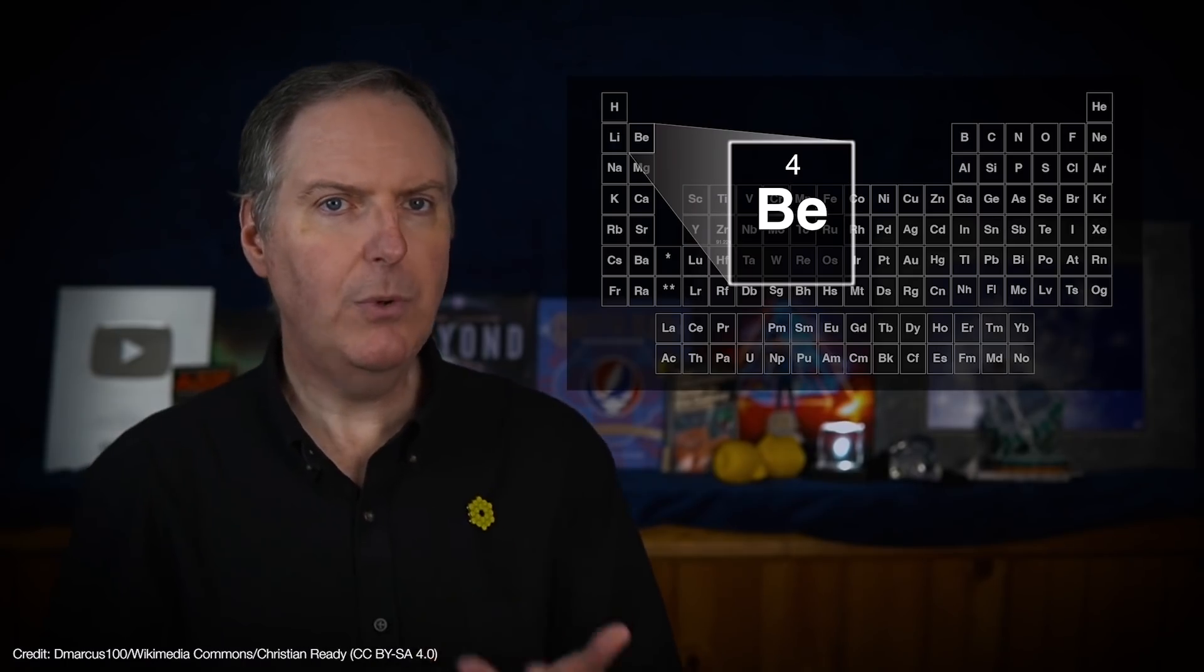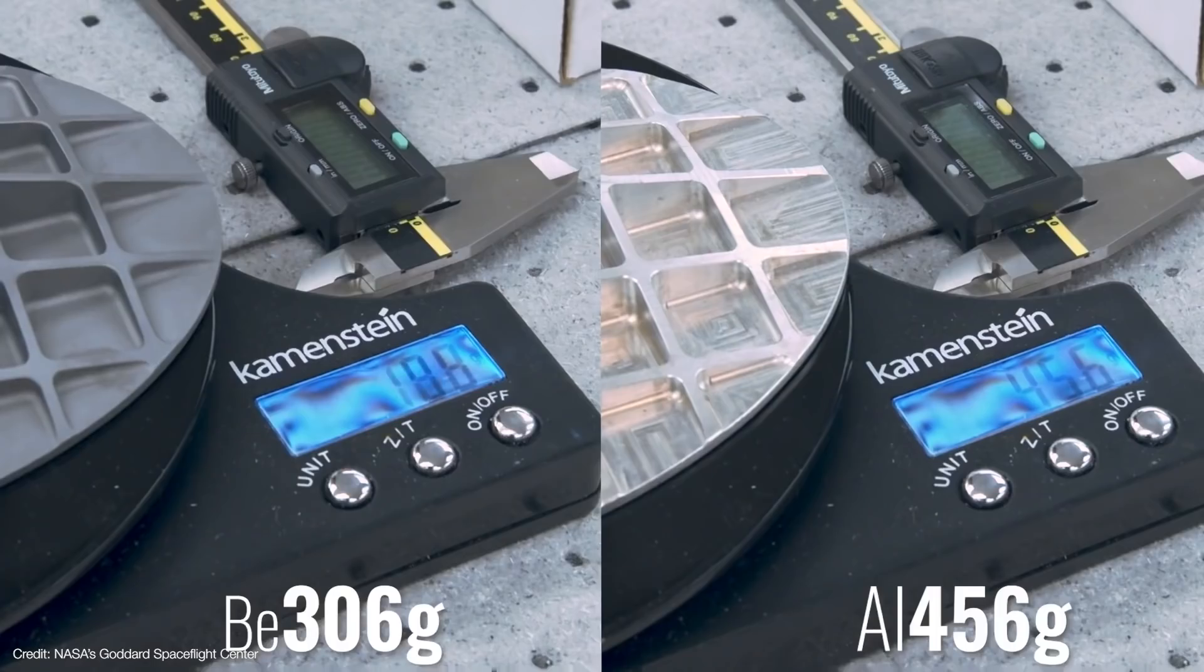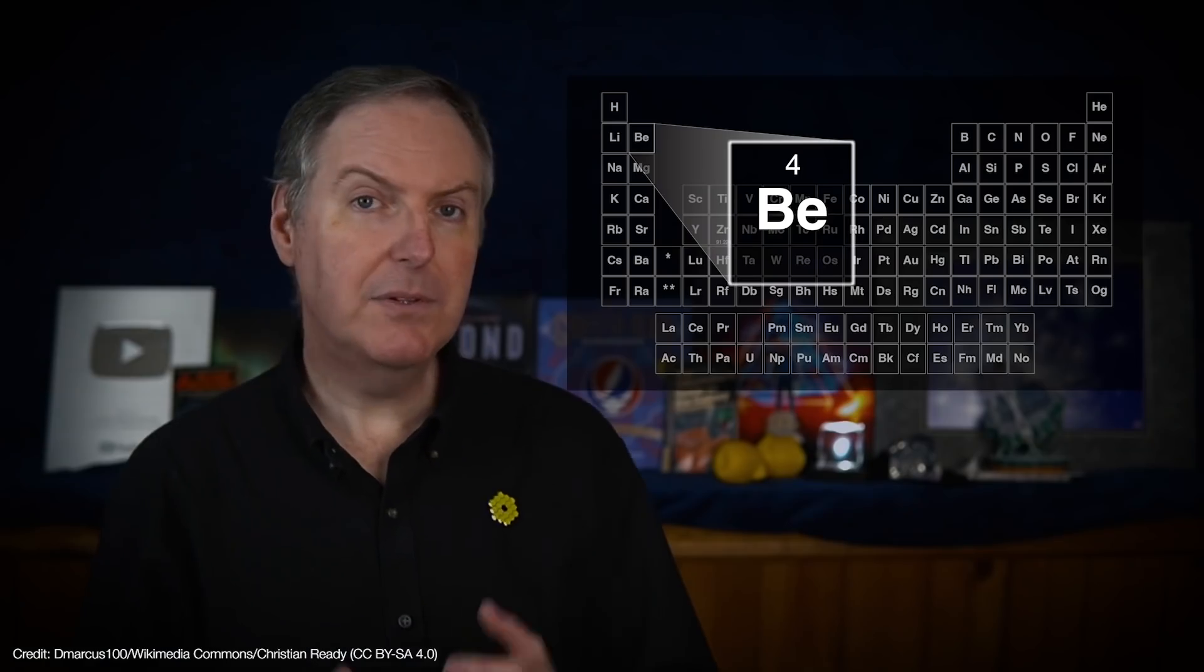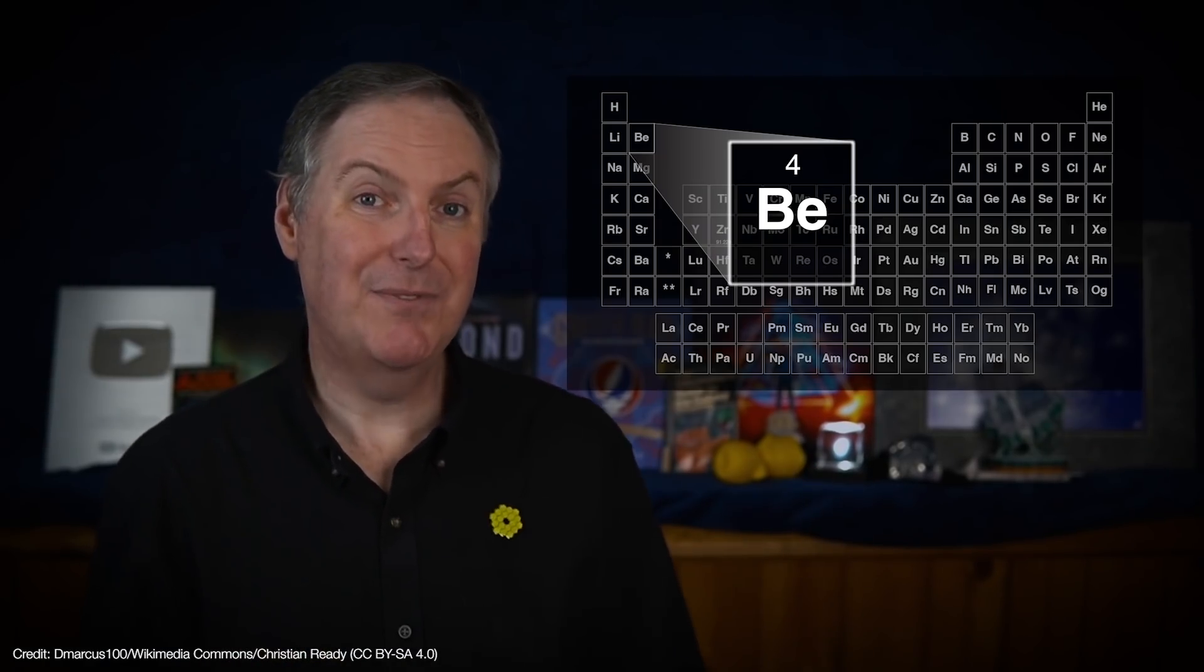With an atomic number of four, beryllium is the second lightest metal on the periodic table. That makes a beryllium segment 33% lighter than a segment made of aluminum. However, beryllium is six times stiffer than aluminum and is even stiffer than titanium.